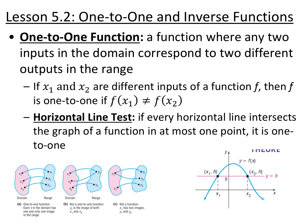Lesson 5.2: 1-to-1 and inverse functions. A 1-to-1 function is a function where any two inputs in the domain correspond to two different outputs in the range. So if you have two different x values, they have to have different y values. Every x has only one y, and also every y only has one x. We have the vertical line test to see if something is a function, and the horizontal line test to see if it's a 1-to-1 function.